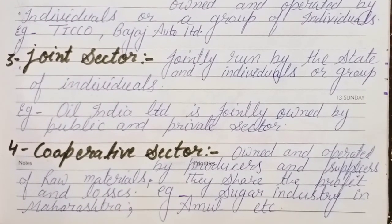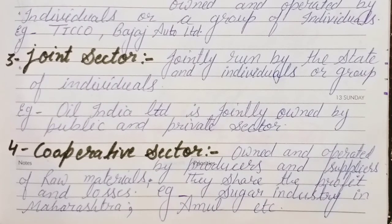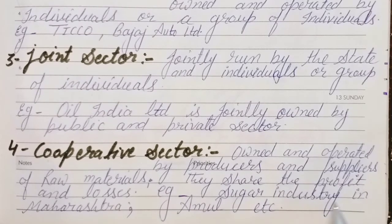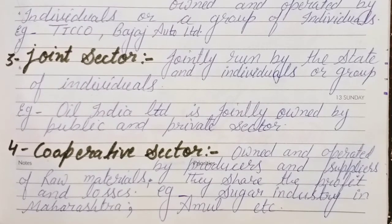Cooperative sector industries are owned and operated by producers and suppliers of raw materials. They share the profit and loss together — that is called a cooperative sector. For example, sugar industries in Maharashtra and Amul Dairy in Gujarat are cooperative sector industries.